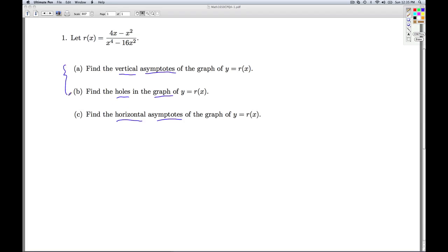Parts A and B are related because the vertical asymptotes of the graph and the holes in the graph come from points that aren't in the domain of the function. So to answer parts A and B, the first thing I'm going to have to do is find the domain of the function r.